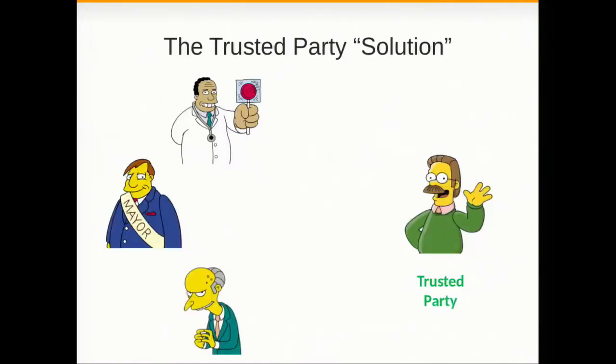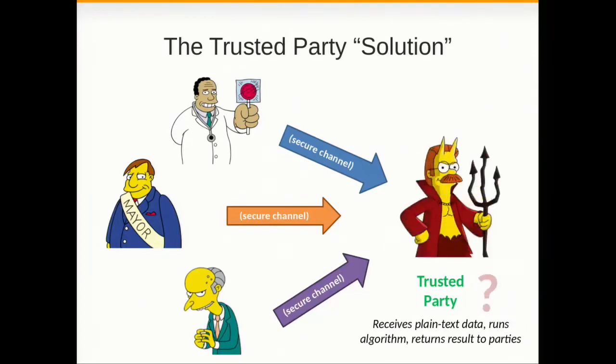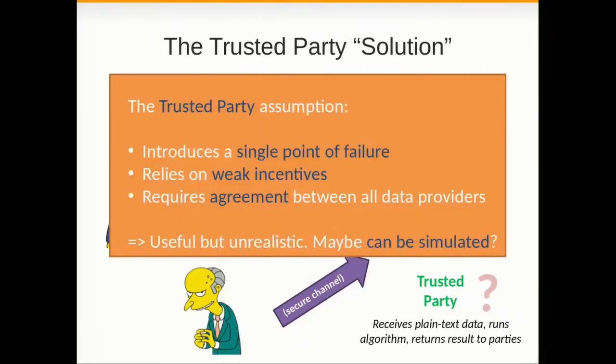The easy solution for this problem is just to rely on a trusted party that gets all the data, computes the model, then sends the model back to the parties. The parties don't learn anything about each other's data. Then it removes the data and tries to forget everything it learned along the way. So the problem with this assumption is that sometimes it is difficult to enforce. It introduces a single point of failure. If the data is very valuable, there might be weak incentives for acting as a trusted party. And it requires an agreement between all the parties.